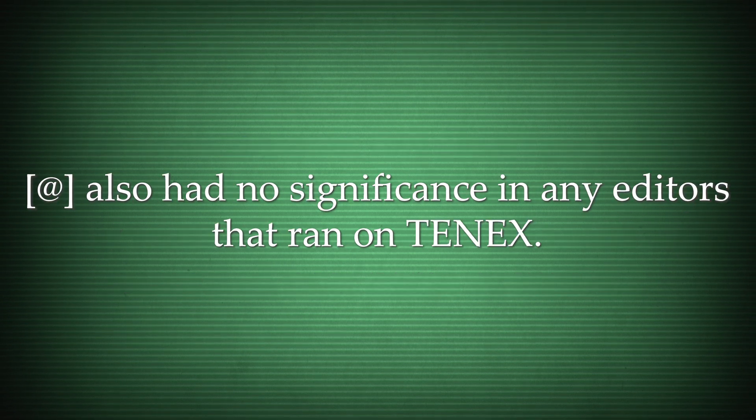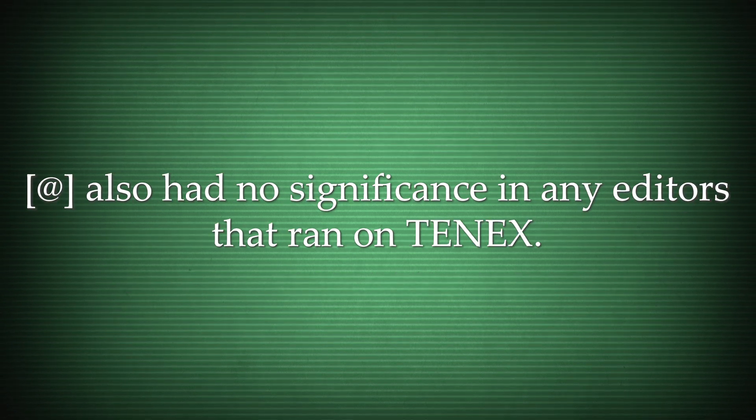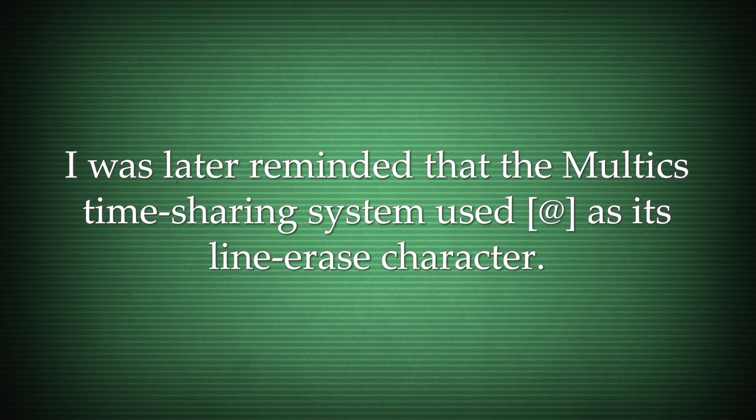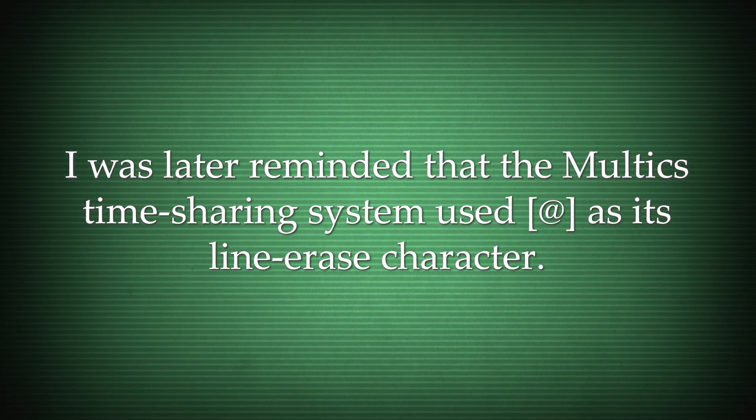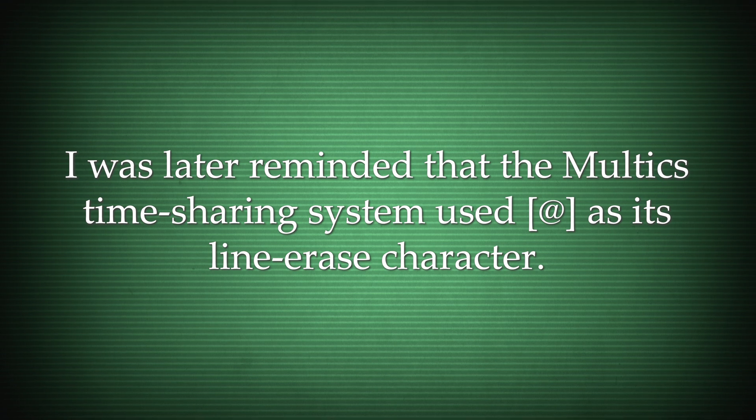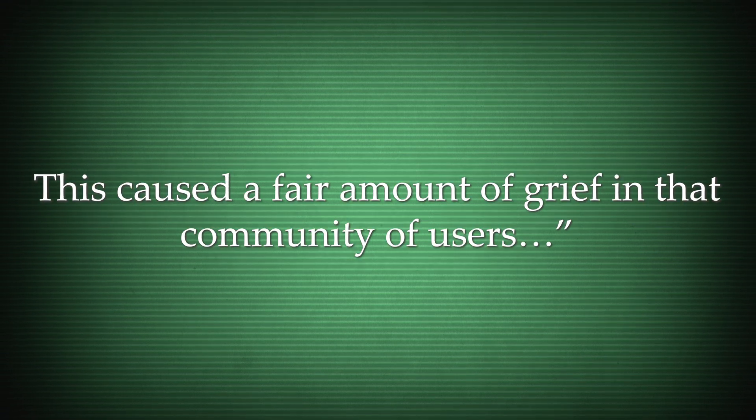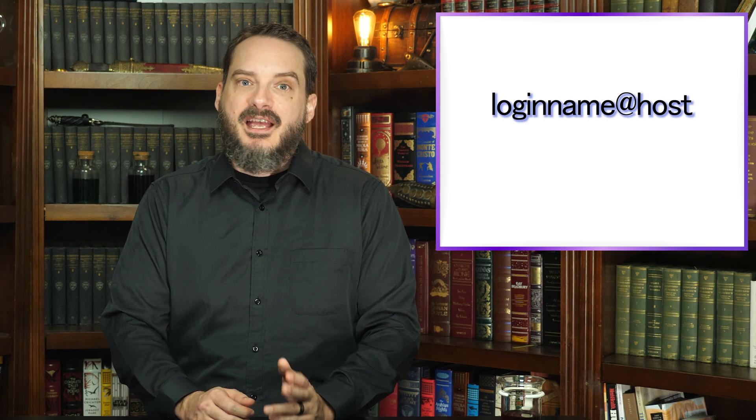At also had no significance in any editors that ran on TENEX. Tomlinson was later reminded that the Multics time-sharing system used at as its line erase character, which caused a fair amount of grief in that community of users. The resulting format he came up with was the login name at host, and later login name at host dot domain once the DNS system was developed. And so what is generally credited as being the first true network email was sent in late 1971 by Tomlinson.